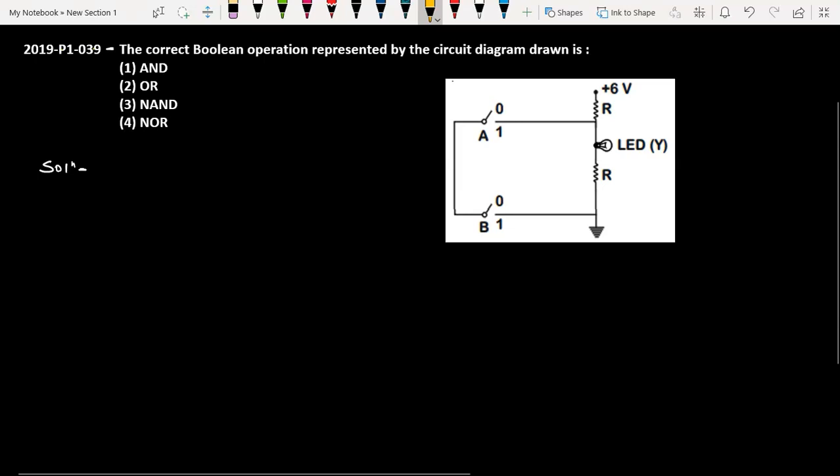This question is from NEET 2019 paper code P1, question 39. The question asks: the correct Boolean operation represented by the circuit diagram drawn is, and we have four options: AND gate, OR gate, NAND gate, and NOR gate. We have to check which option is the correct one.